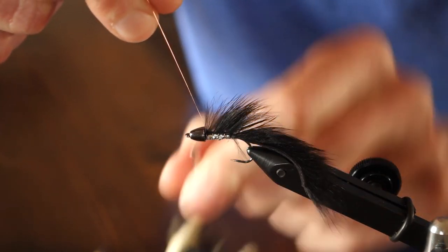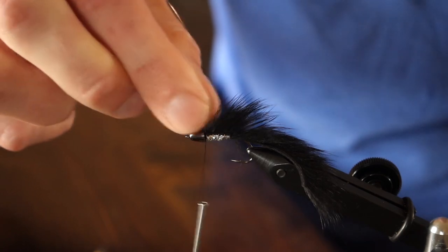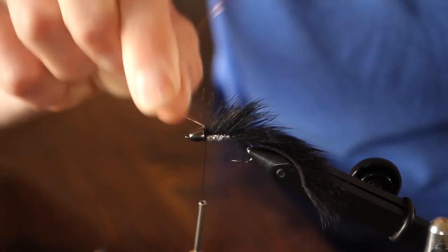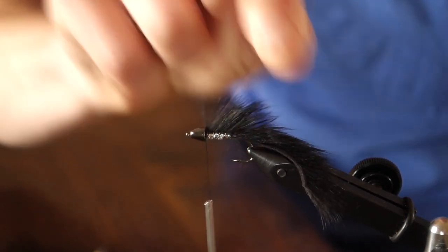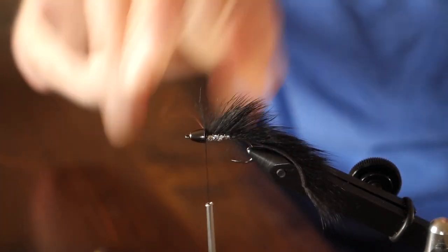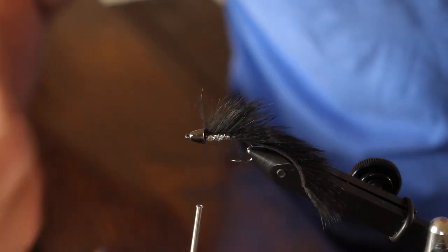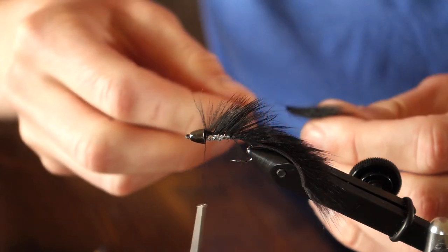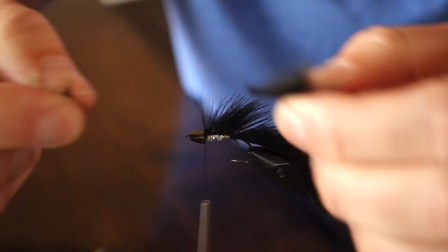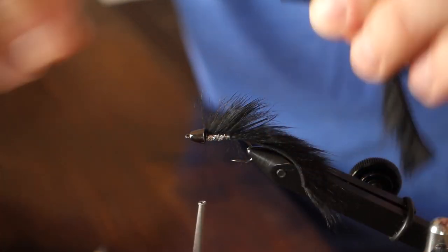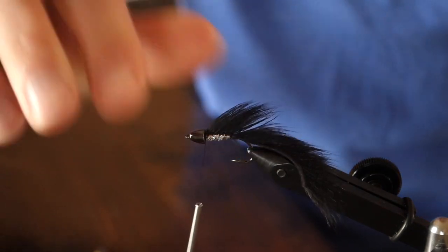Once I've got my wire back up to the cone head I'll go ahead and tie it off and helicopter that wire off. Now I'm ready to tie in the collar of this fly. The collar again is going to be pine squirrel zonker. Same thing, I'm going to pull off some of the fibers from the front to have a little piece of exposed leather.